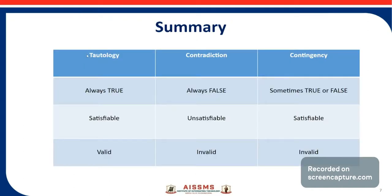Here is a summary. Tautology is always true. Contradiction is always false. Contingency is sometimes true or false. Tautology is always satisfiable; contingency is always satisfiable. On the other hand, contradiction is unsatisfiable. Tautology is valid. On the other hand, contradiction and contingency are invalid. So this is all about tautology, contradiction, contingency, and satisfiability. Thank you.